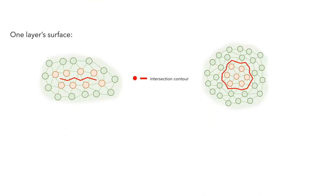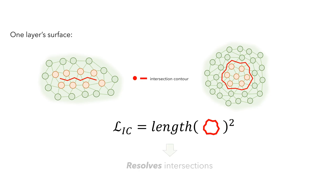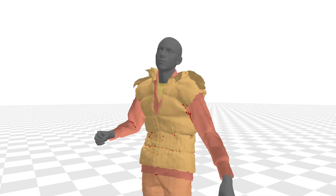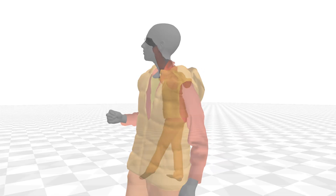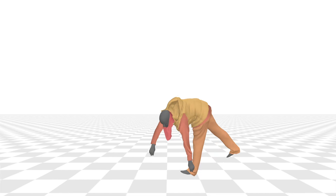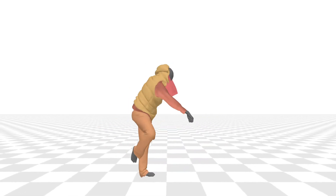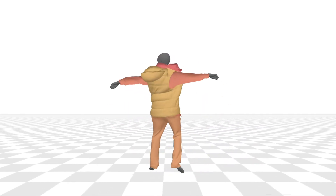However, our key contribution is the intersection contour objective. It penalizes the length of the intersection contours and encourages the model to resolve existing intersections. Trained with the intersection contour loss, our GNN can resolve intersections that are present in the initial geometry, allowing us to simulate complex multi-layer outfits in dynamic scenes.